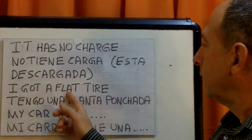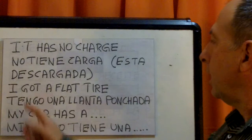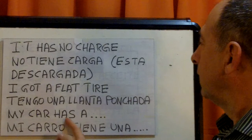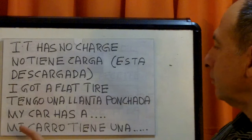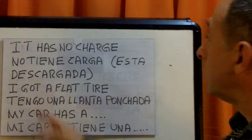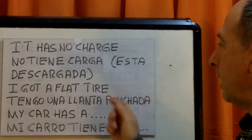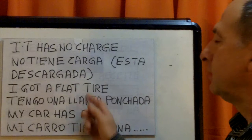I got a flat tire — tengo una llanta ponchada. In Mexico we call it ponchada. I got — tengo. Tengo una llanta ponchada. Or you can say: my car has a flat tire — mi carro tiene una llanta ponchada. Practice: no tiene carga, mi batería no tiene carga, mi batería está descargada, tengo una llanta ponchada, mi carro tiene una llanta ponchada — my car has a flat tire.